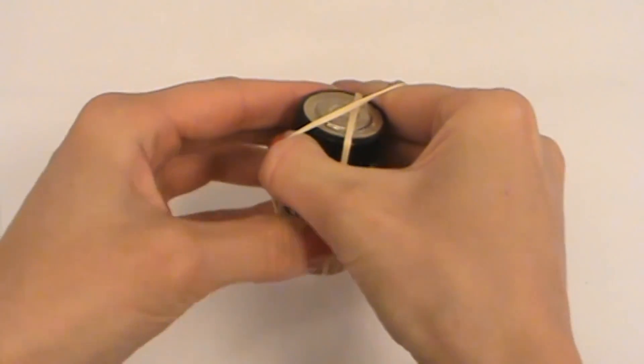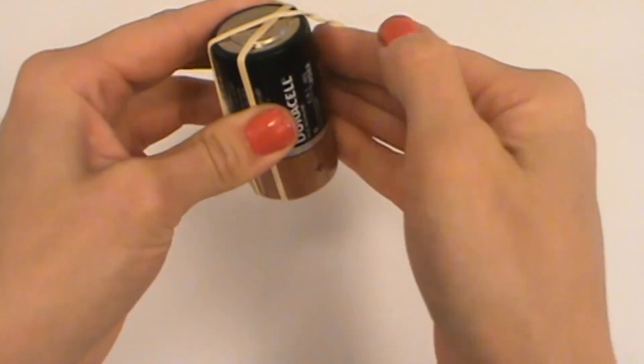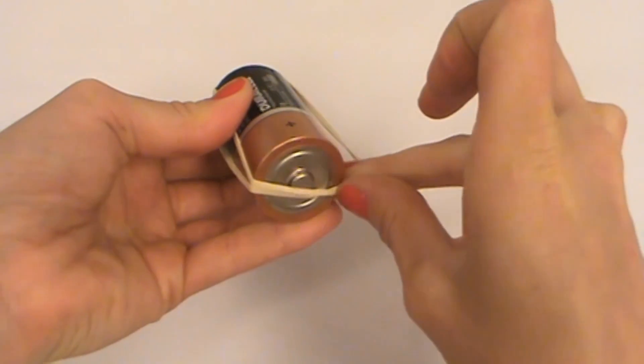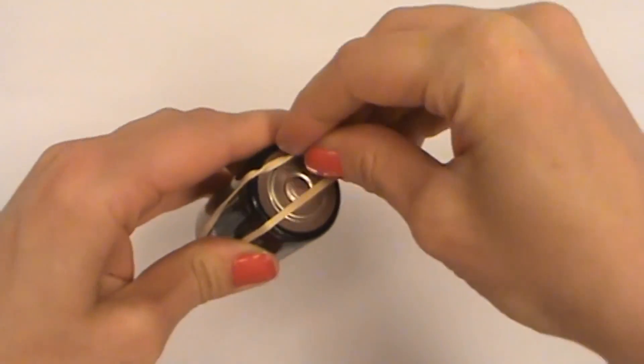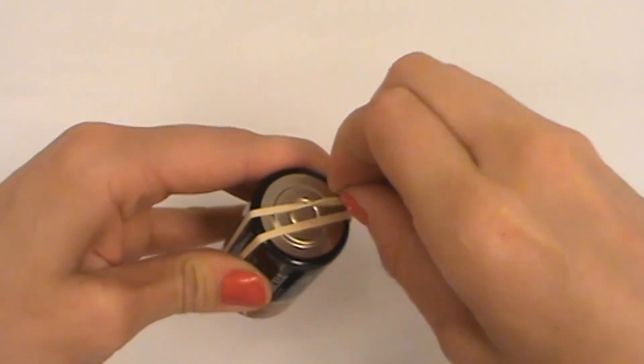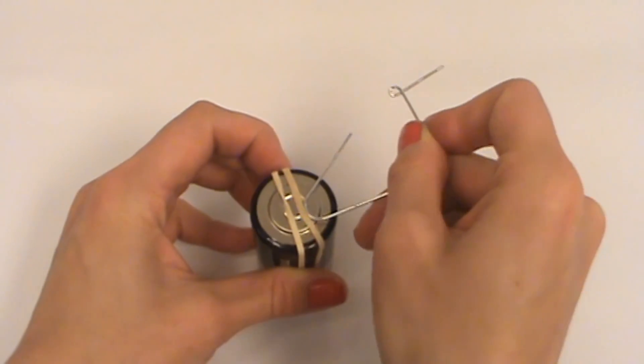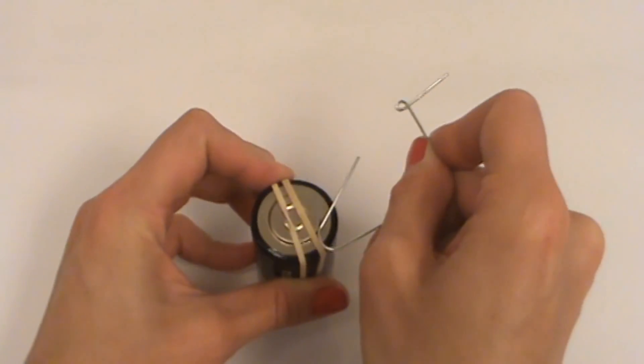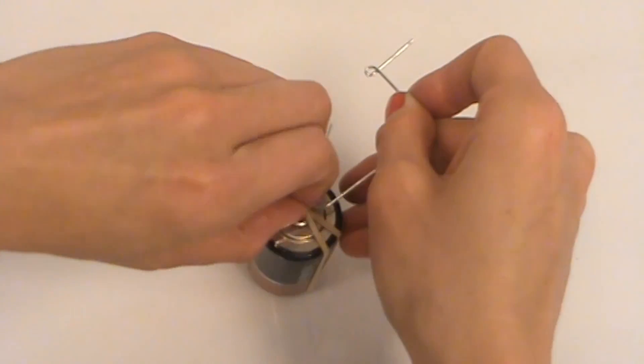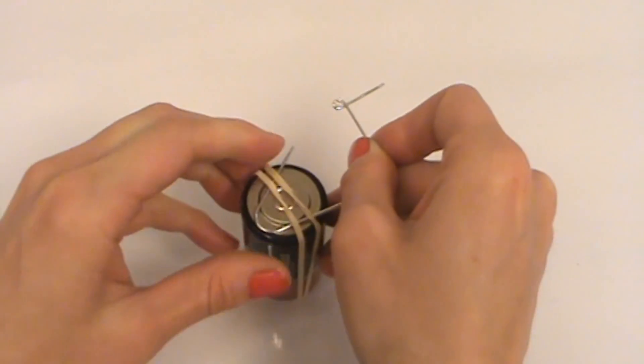You want the rubber band to be touching both the positive and the negative terminals because this is going to fasten your paper clip holders in. Now you will take your paper clips and slide them into each end of the battery as shown. Make sure that the paper clips are touching the metal contacts of the battery end.